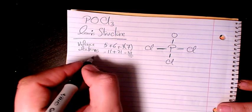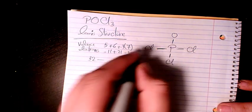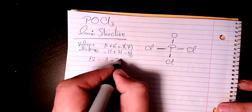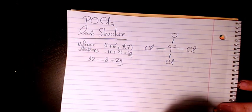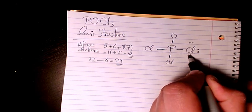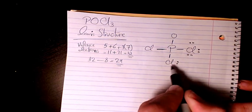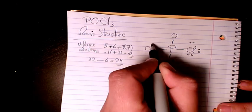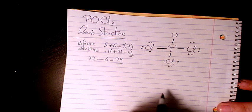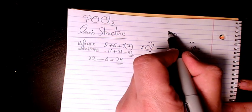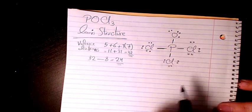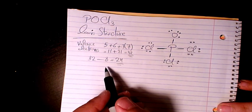Then I find out the remaining number of electrons. We have 32 minus four bonds — four bonds times two equals eight — so that means we need 24 more electrons. We place those remaining electrons as lone pairs around the atoms, and there is one extra set of four for phosphorus.